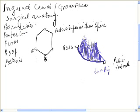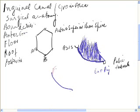Now we come to the roof. The roof is formed by the internal oblique and the transversus abdominis fibers, which arise from the lateral two-thirds of the inguinal ligament.